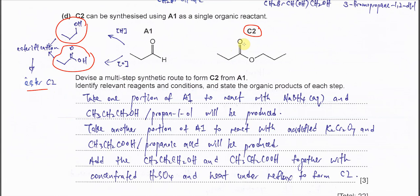This is the planning to get this C2. First, take one portion of A1 to react with sodium borohydride, and propan-1-ol or this CH3CH2CH2OH will be produced. Take another portion of A1, react with acidified potassium dichromate, so the propanoic acid will be produced. Then add this propan-1-ol and propanoic acid together with concentrated H2SO4, heat under reflux to form the C2. That's the plan.